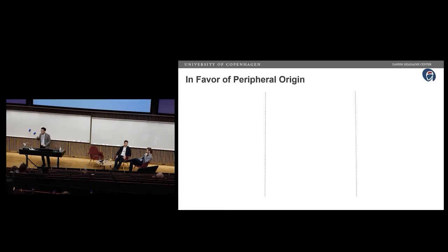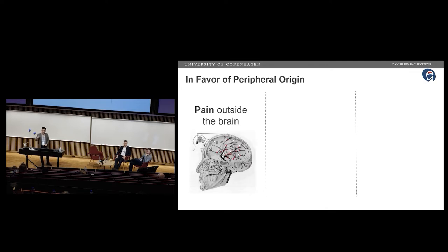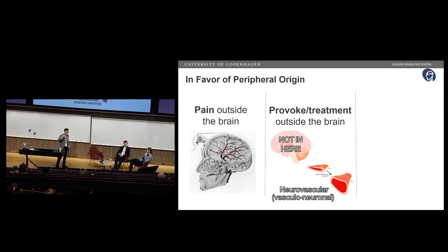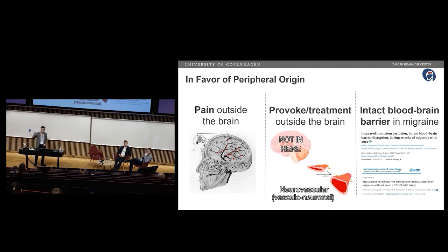In summary, in favor of peripheral origin of migraine attacks: first, the nociceptive structures are outside of the brain. Second, you can both provoke and treat migraine attacks purely through peripheral mechanisms. Third — and be aware of the terminology — neurovascular versus vascular-neuronal: the nociceptive structures are around the vessels, so it's more likely vascular-neuronal than purely vascular. And the blood-brain barrier is intact during migraine attacks, so that is not a valid argument. Anatomy, provocation, and treatment all point in one direction: peripheral origin.